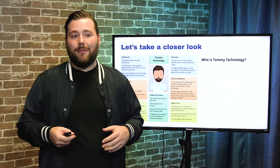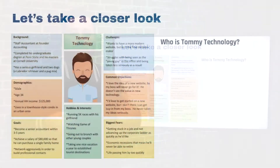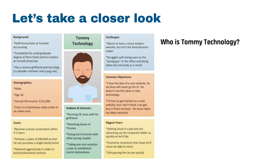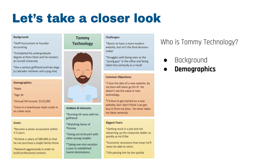We've got an example here. This guy's name is Tommy Technology, and we're going to look at all the different aspects you'll use when building your customer avatar. First, let's look at background. Tommy is a staff accountant at Founder Accounting. He completed his undergraduate degree at Penn State and his master's at Cornell University, and he has a serious girlfriend and two dogs — a Labrador Retriever and a pug mix.